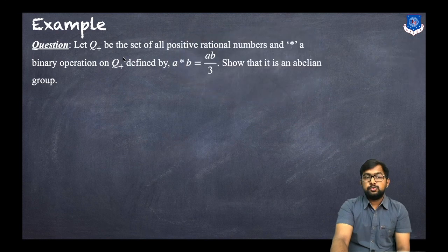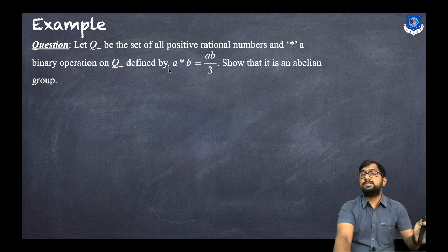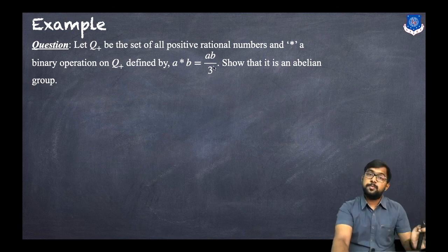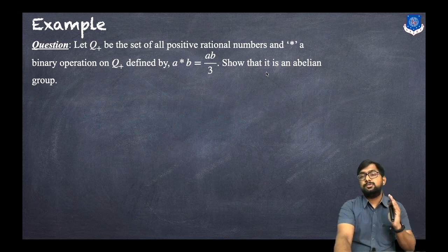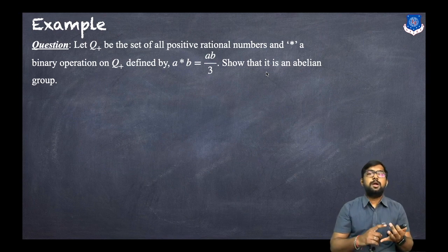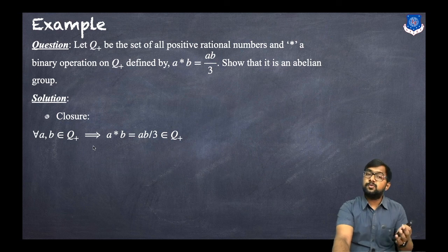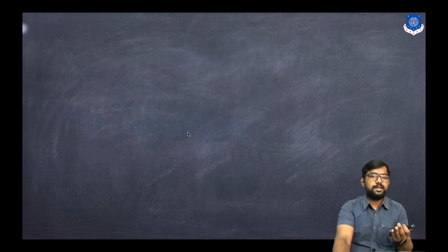Let Q+ be the set of all positive rational numbers, and star is a binary operation defined as a star b = ab/3. Note that the star operation is not necessarily standard multiplication. We need to show that it is an abelian group, so we check all five properties: closure, associative, identity, inverse, and commutative. For closure: for every a, b in Q+, a star b = ab/3, which is also in Q+, so the closure property holds.